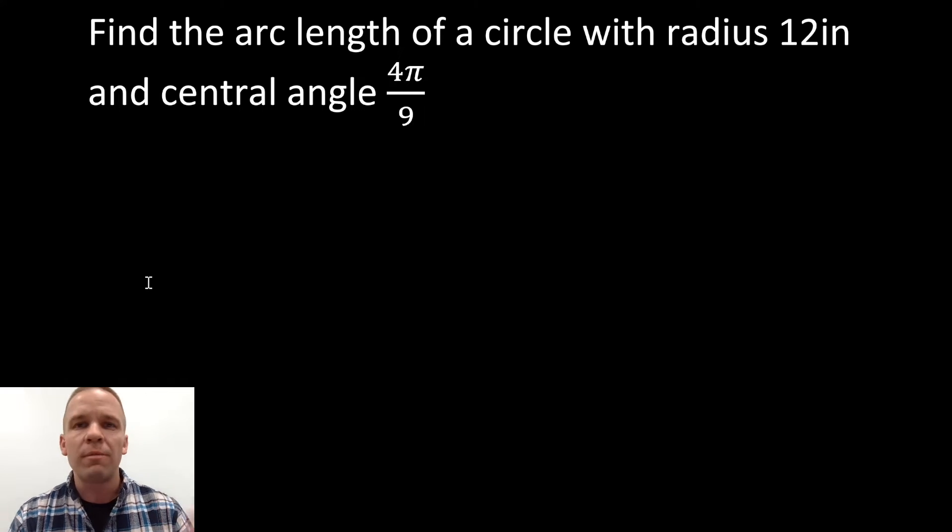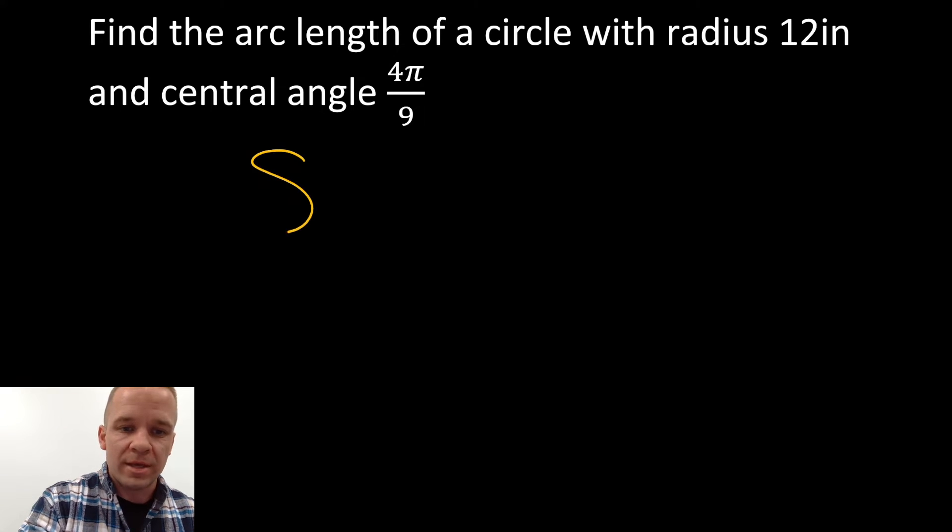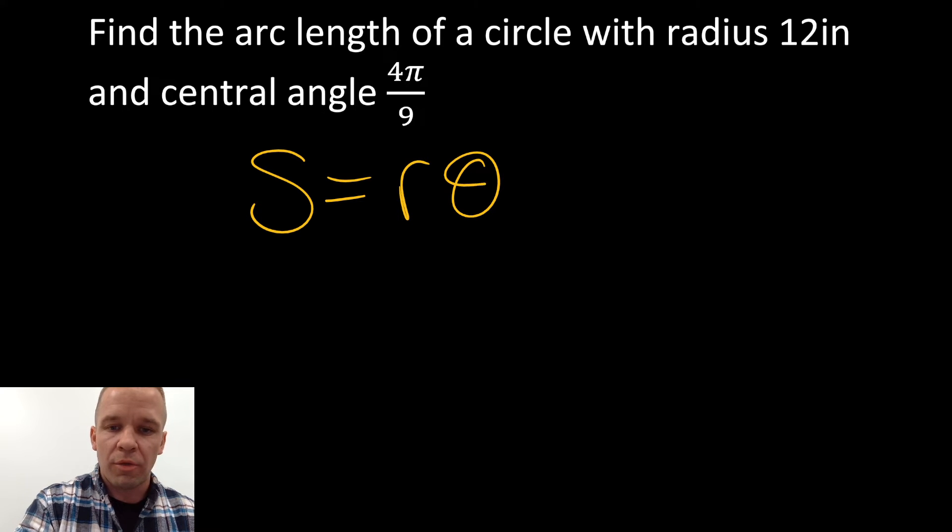Isn't that a thing, right? You just gotta remember the formula, bro. Not always just that easy, but this one is. Arc length is S equals r times θ when θ is in radians.